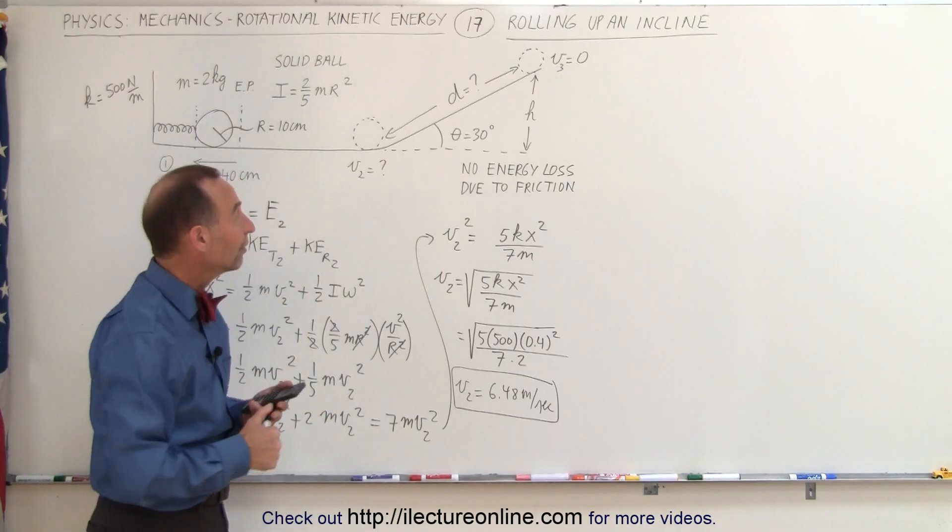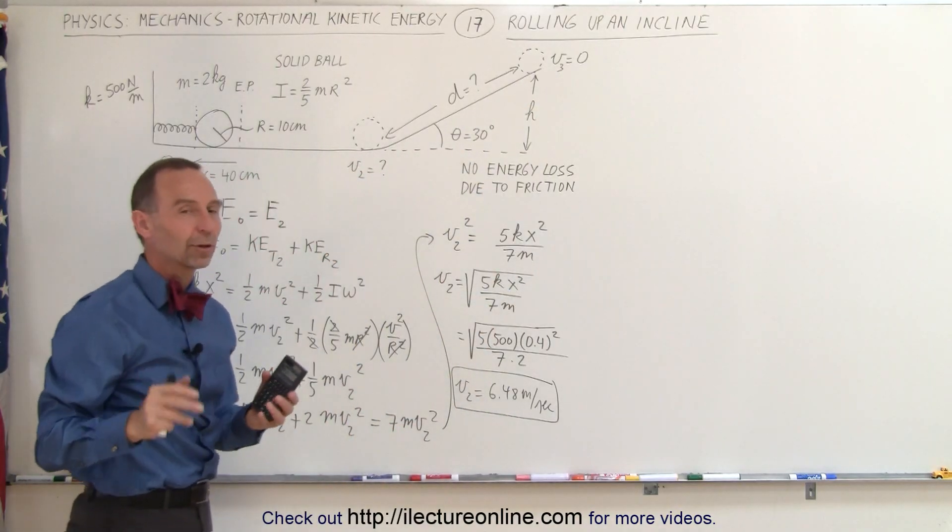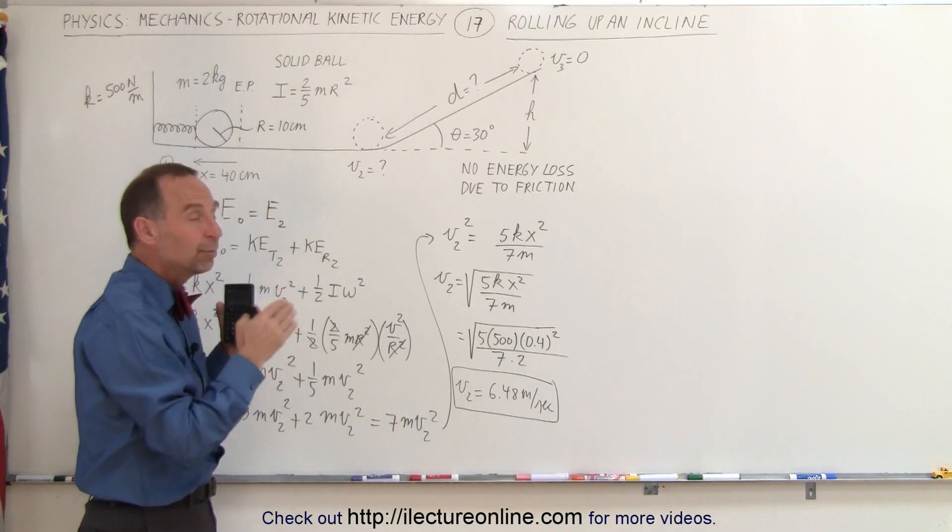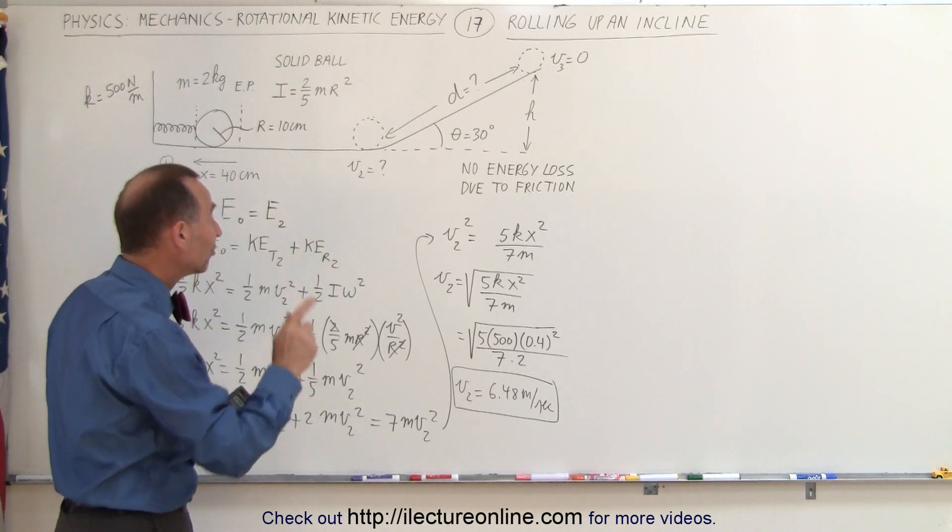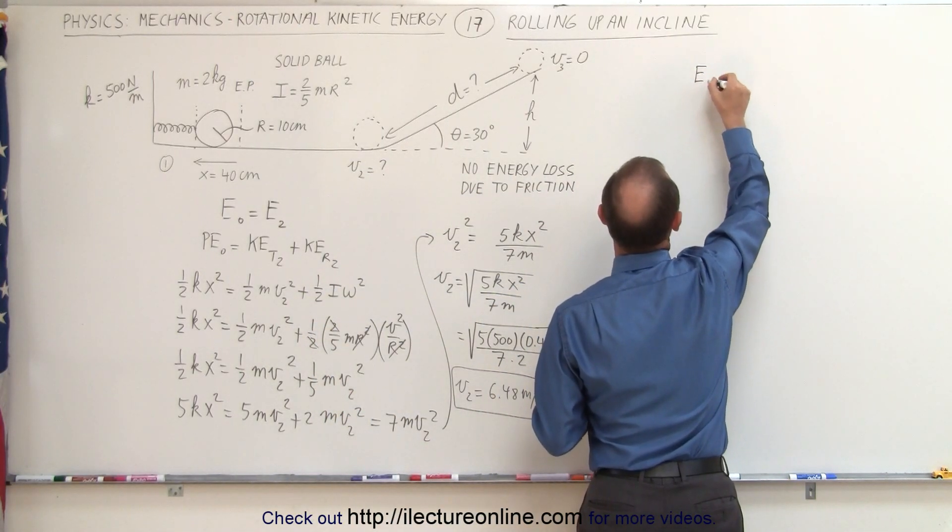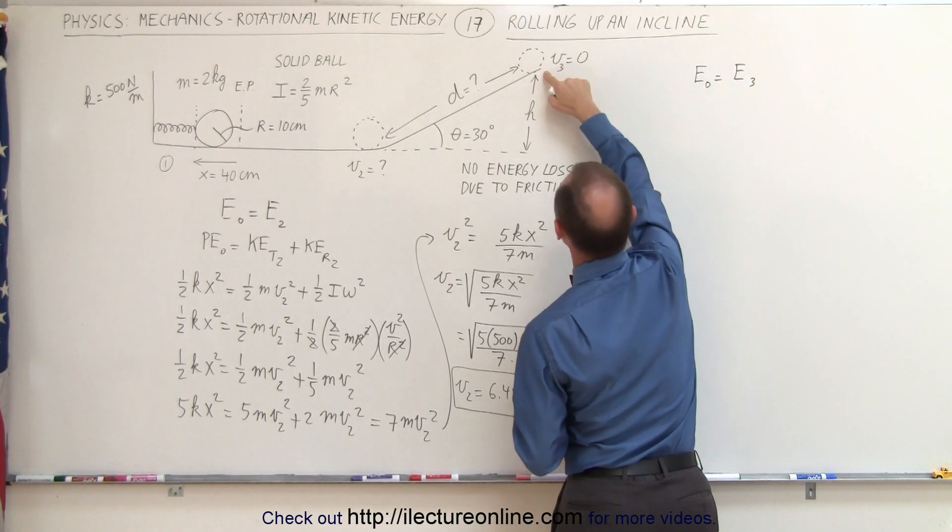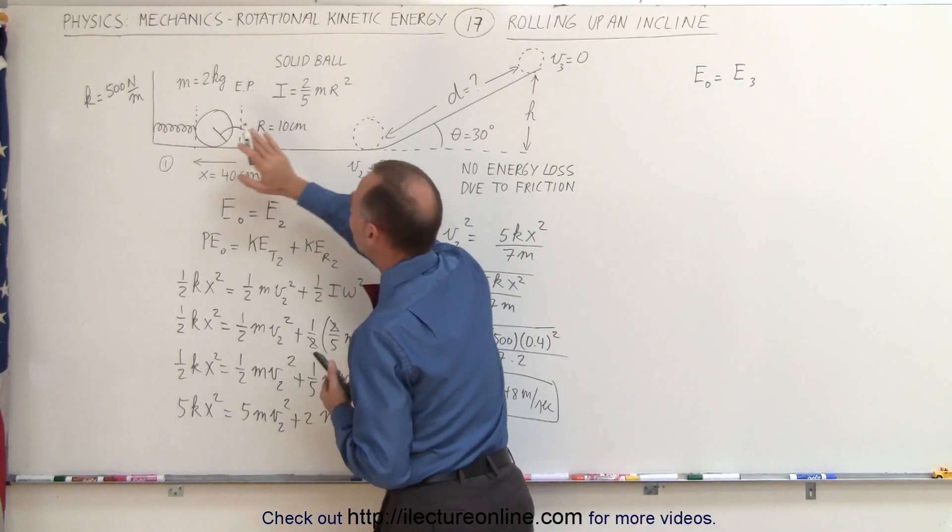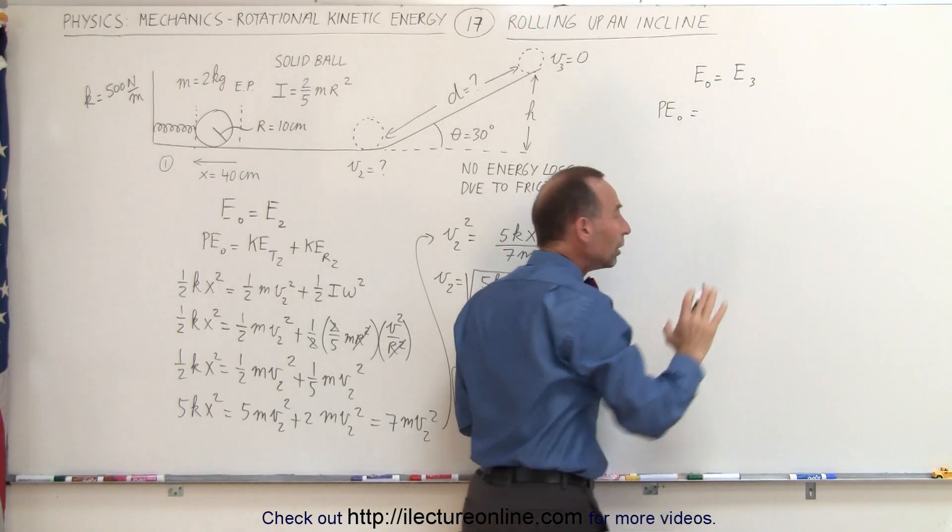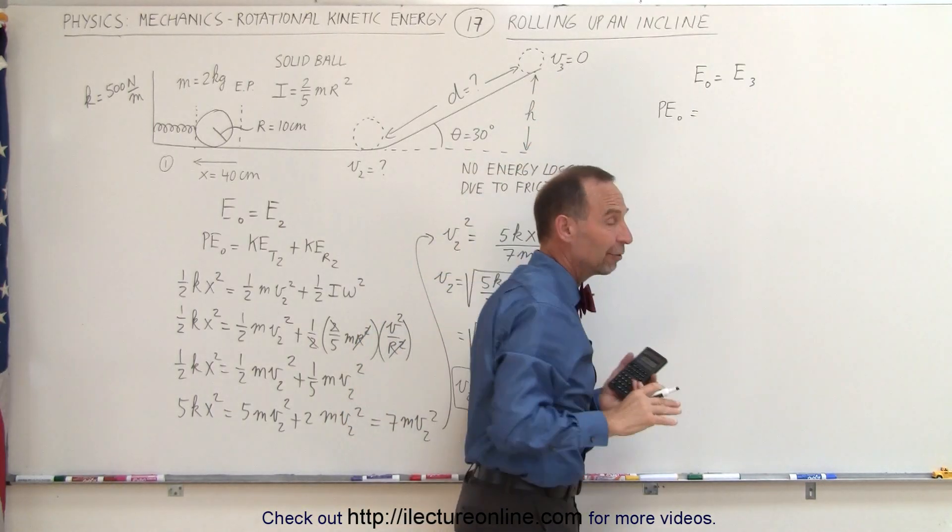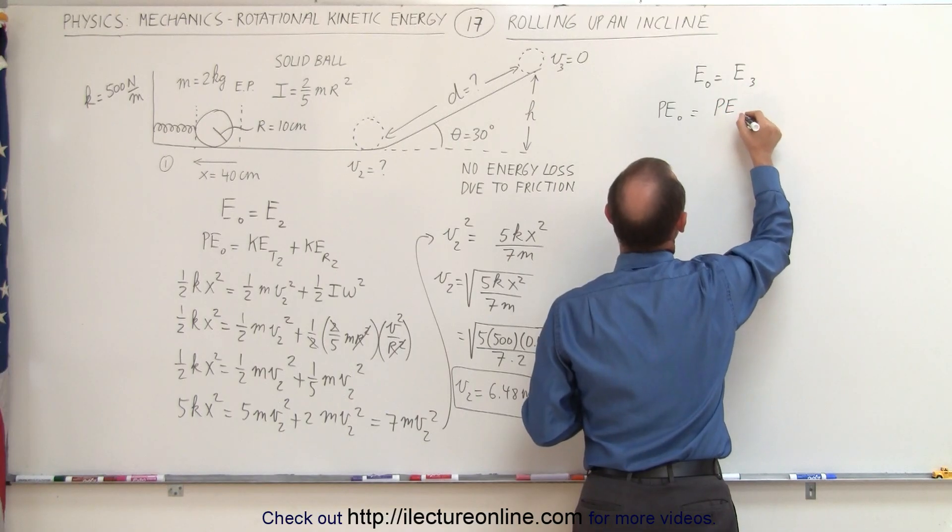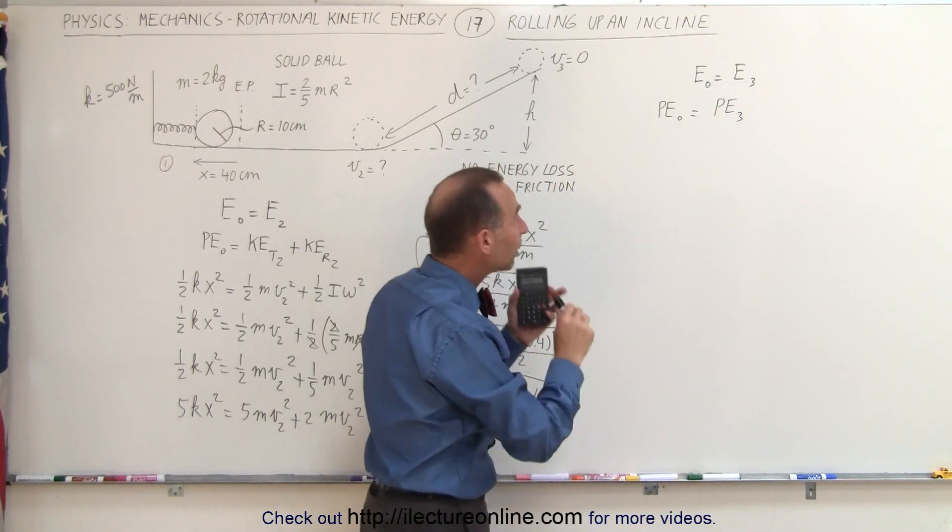Now for the second part, we're trying to find how far up the incline it will go before it comes to a complete stop. What's interesting here is you would think that because it has rotational and translational kinetic energy, it would be different than if the object was sliding. But in actuality, that is not going to be the case. And let's find out why. So again, we use the equation energy initial equals energy at location 3. So now the final position will be up here. And the initial energy will be the stored potential energy in the spring. The energy at location 3 will only be potential energy because the velocity at that point will be 0. Therefore, there will be no translational kinetic energy, no rotational kinetic energy. Therefore, the energy at point 3 will only be potential energy at point 3.